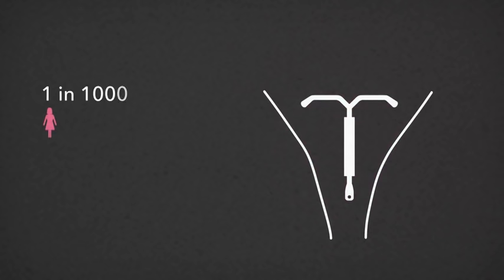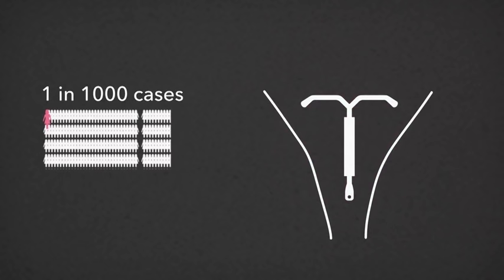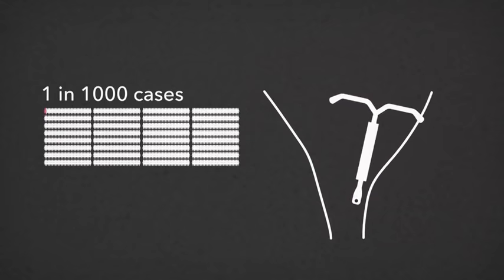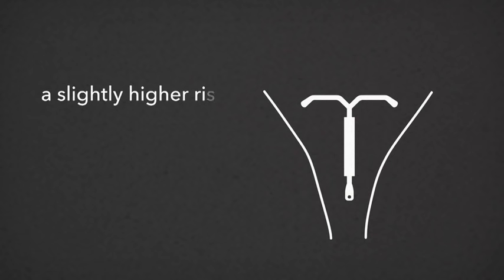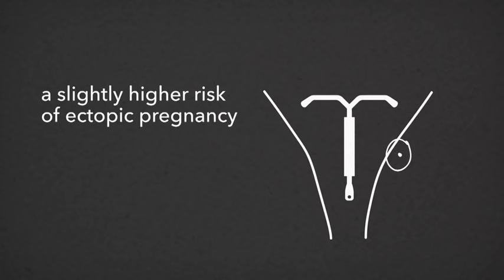In one in a thousand cases, the IUD or Mirena can go through the wall of the womb. If this happens, you may need a small operation to remove the device. You are overall less likely to fall pregnant with an IUD or Mirena, but if you did, then there is a slightly higher risk of it being a pregnancy outside the womb, which is called an ectopic pregnancy.